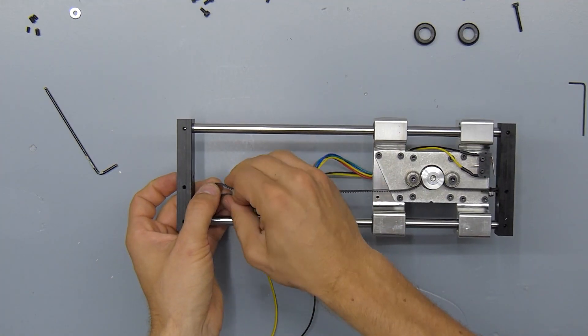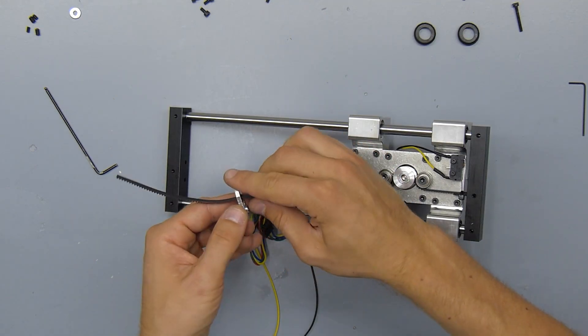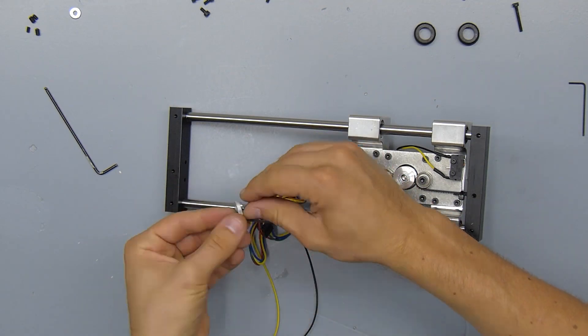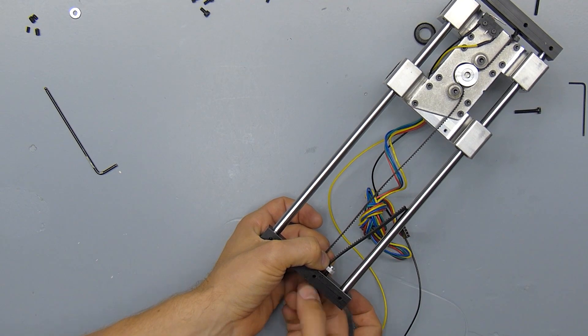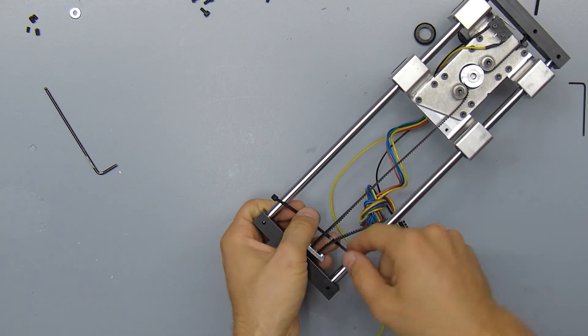On the other side, we're going to use the remaining belt clip and we're going to thread the belt through the clip and then attach the clip to the end block with two 20mm M3 screws. Don't thread these in too far yet, because we're still going to tension the belt and zip tie it into place.